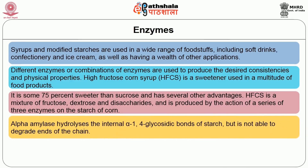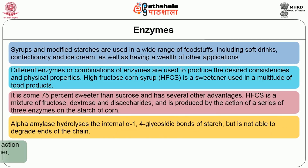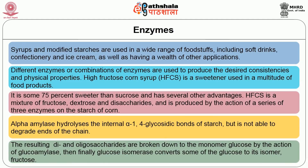Alpha-amylase first hydrolyzes the internal alpha-1,4 glycosidic bonds of starch but is not able to degrade the ends of the chain. The resulting dextrins and oligosaccharides are broken down to the monomer glucose by the action of glucoamylase. Then finally, glucose isomerase converts some of the glucose into its isomer fructose.